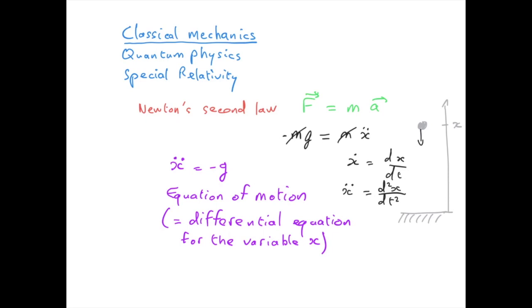For such a simple differential equation you can easily solve for x and what you get is a function of time where v naught and x naught are constants of integration. In this case, v naught is the initial velocity at t equals zero and x naught is the initial height of the object.